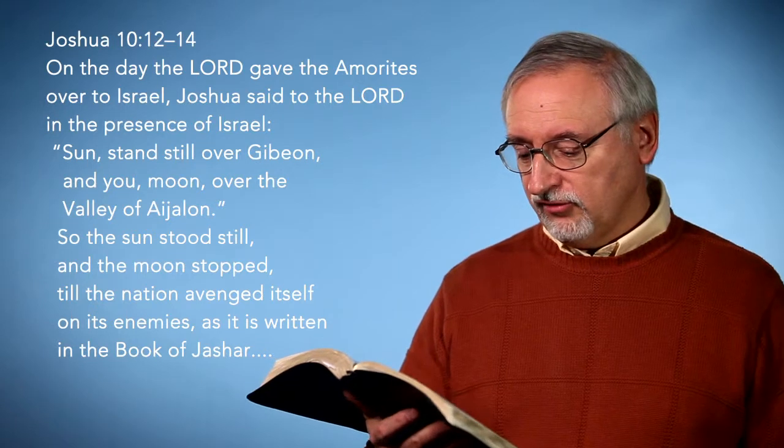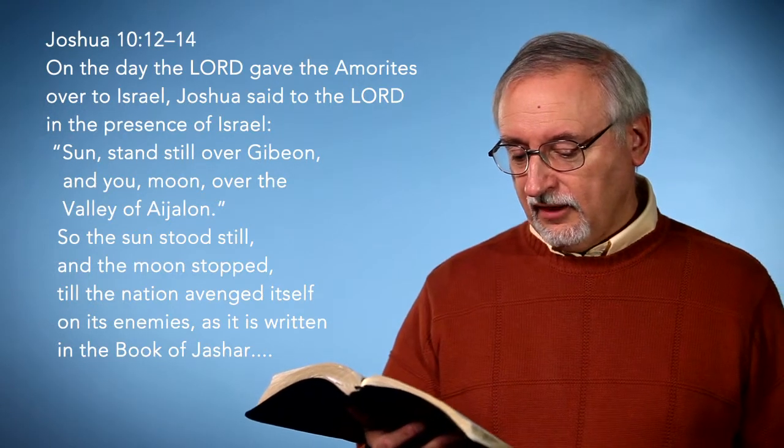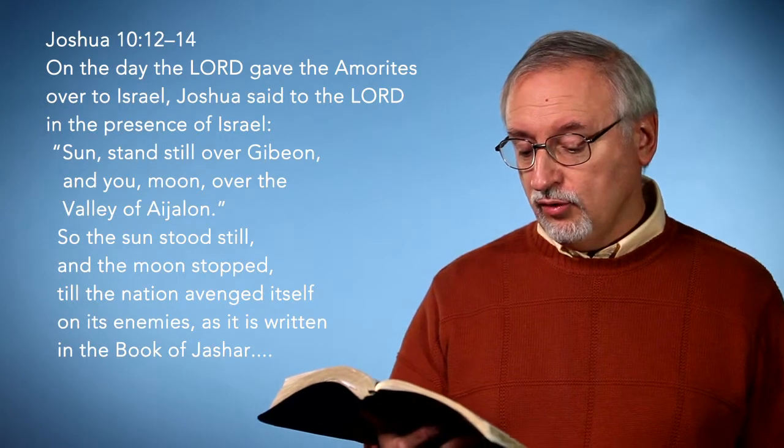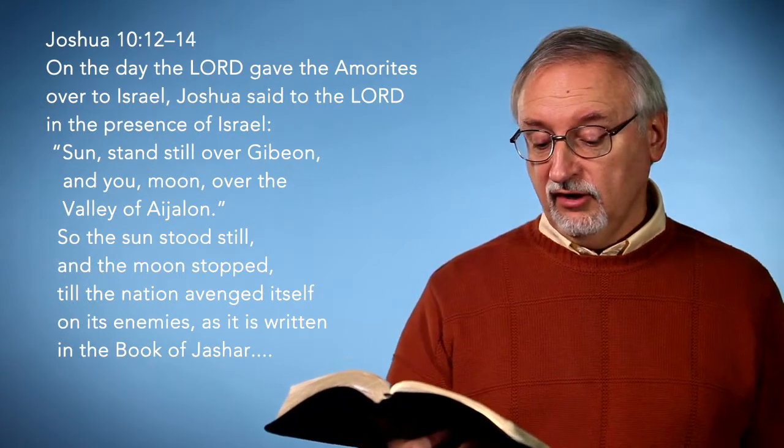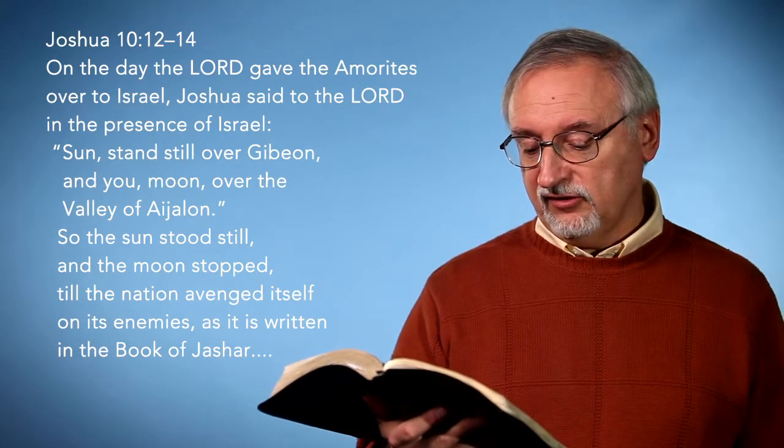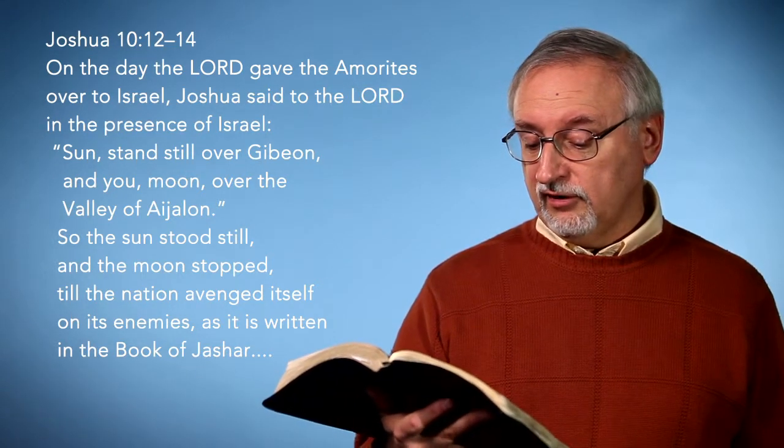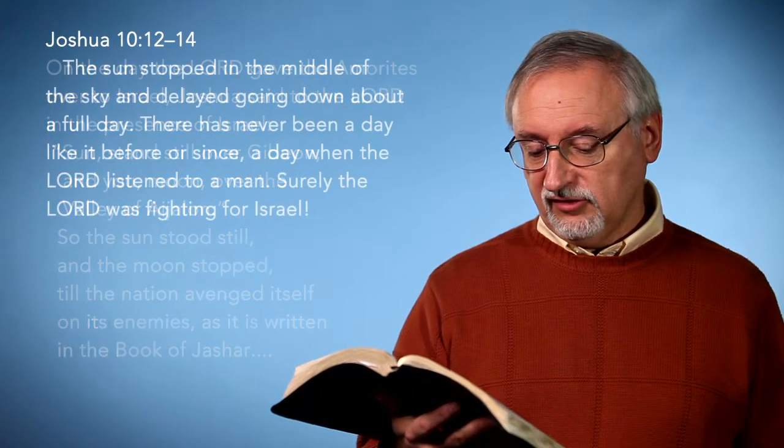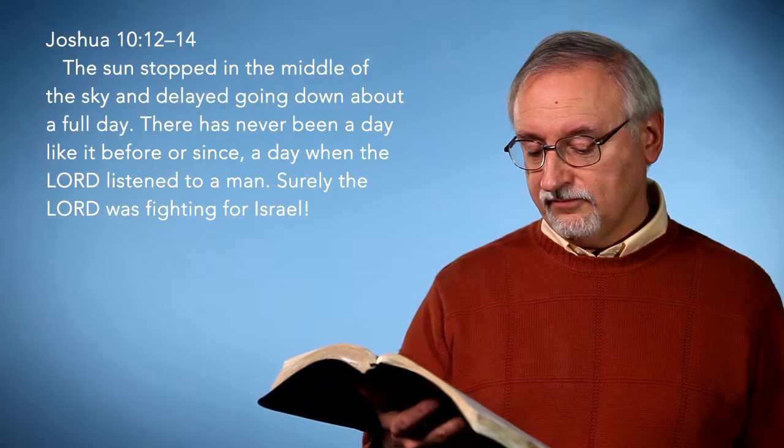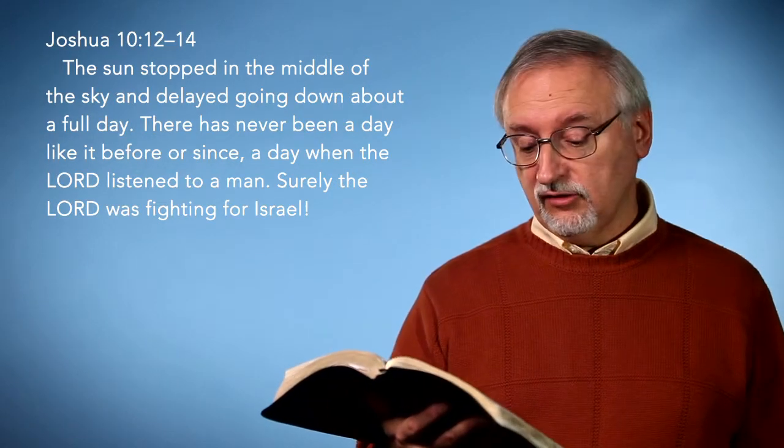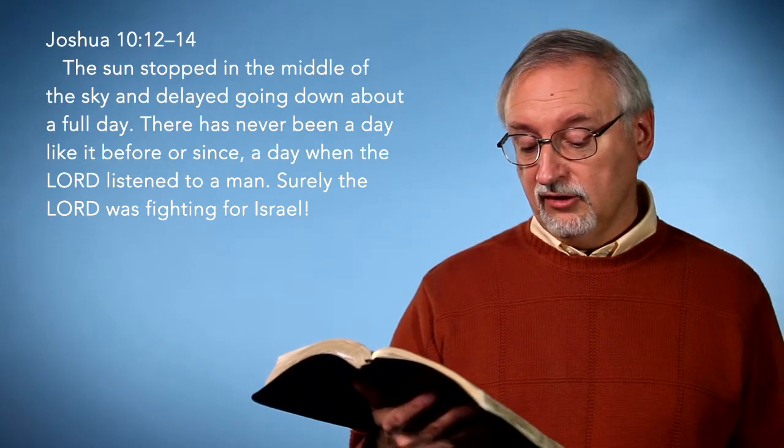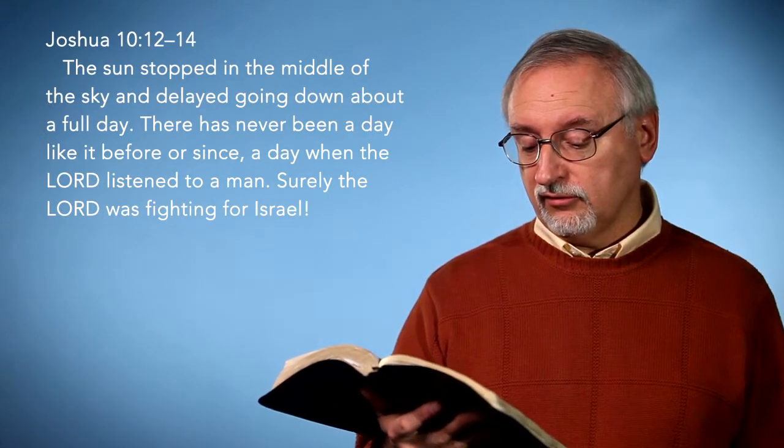I'm in chapter 10 of Joshua, verse 12. And Joshua's prayer is, O sun, stand still over Gibeon, O moon, over the valley of Ajalon. So the sun stood still and the moon stopped till the nation avenged itself on its enemies. As it is written in the book of Jashar, the sun stopped in the middle of the sky and delayed going down about a full day. It goes on to say that there has never been a day like it before or since, a day when the Lord listened to a man. Surely the Lord was fighting for Israel.